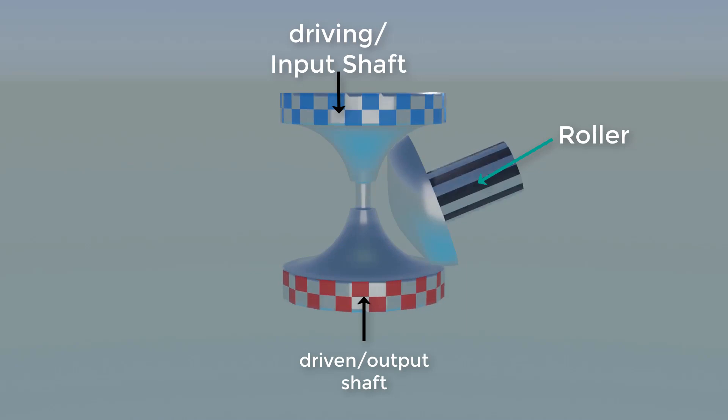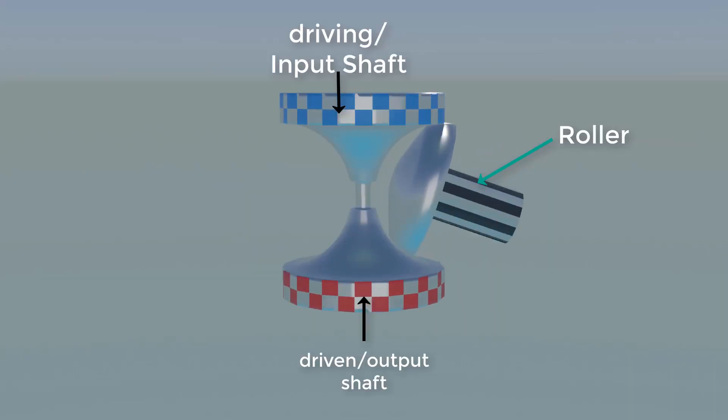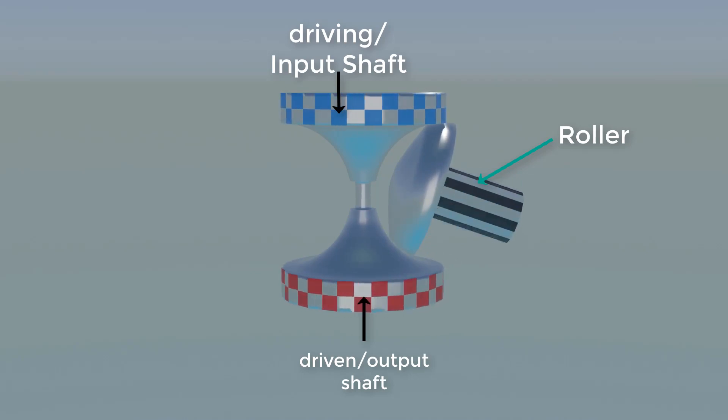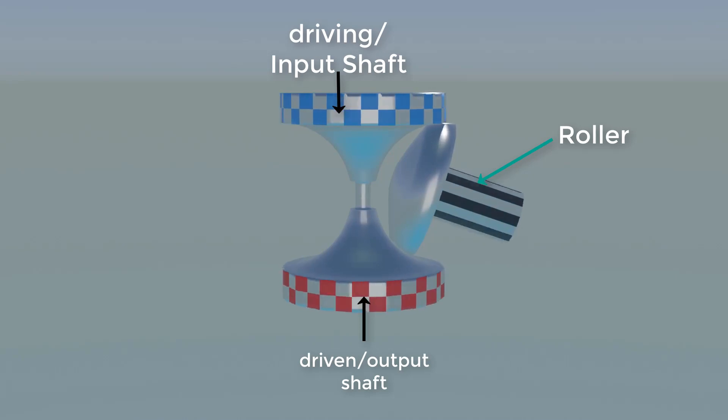Similarly, in the other configuration when the roller contacts the larger radius of the driving disc and smaller radius of the driven disc, it gives a high RPM at output. This thing is acting like a big gear rotating a small gear. You can make infinite number of gear ratios between these two extremes.